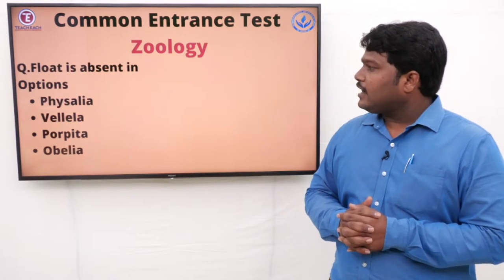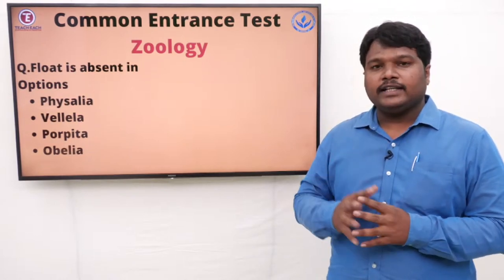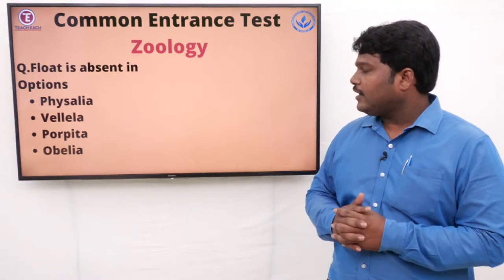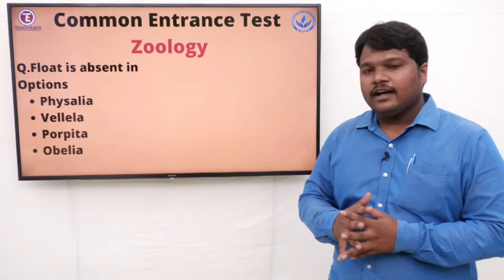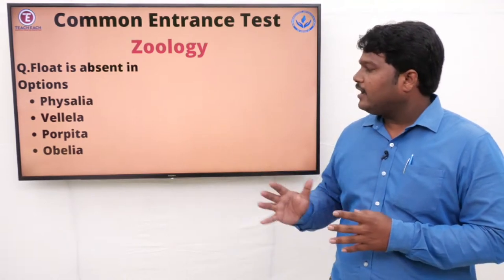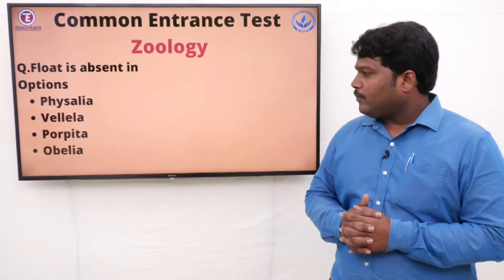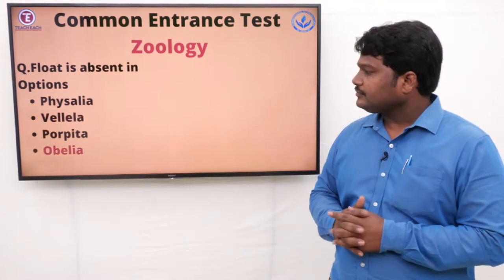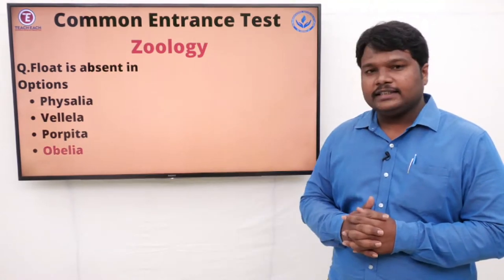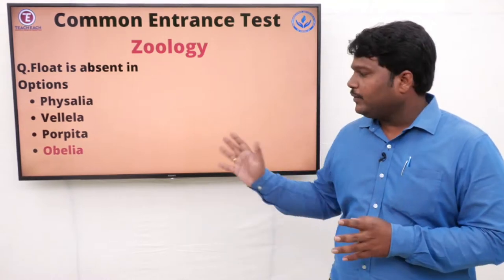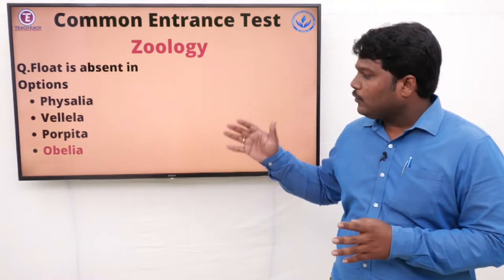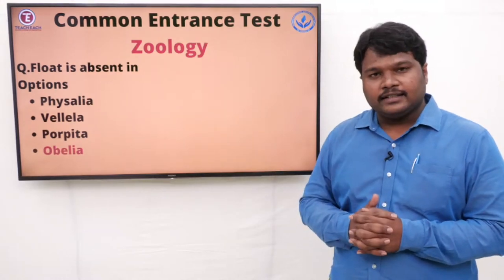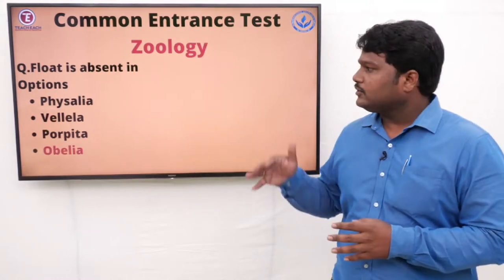Question 10: Float is absent in. Float is a different type of structure — it is absent in which type of living organism? Options: A) Physalia, B) Velella, C) Porpita, D) Obelia. The right option is Obelia. Float is not present in Obelia; except for Obelia, the remaining three organisms all contain a float.